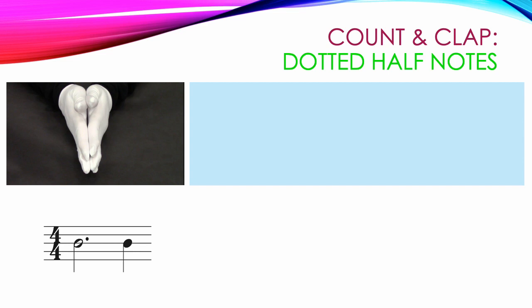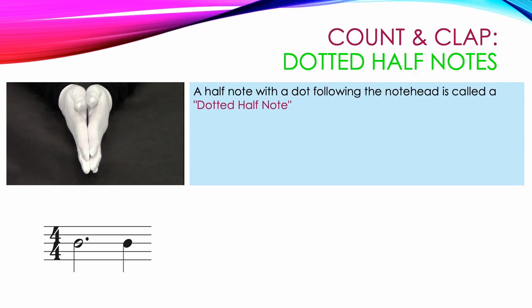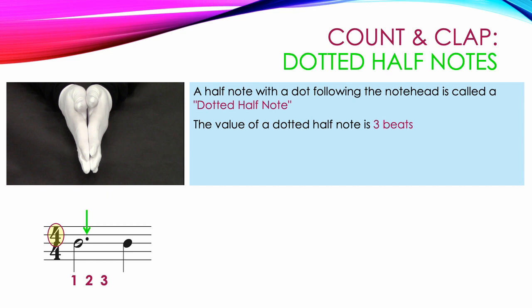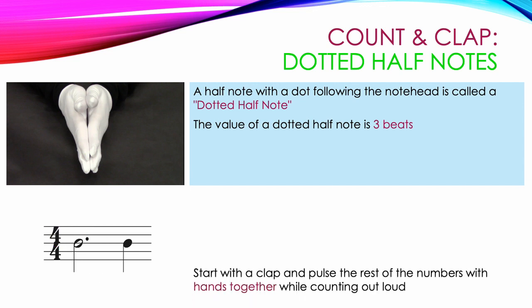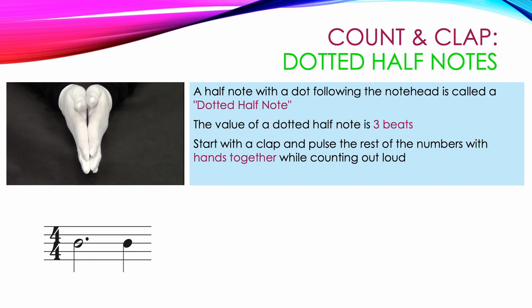Now that you understand how ties work, it's time to take a look at a new kind of note. A half note with a dot following the note head is called a dotted half note. The value of a dotted half note is three beats, so we put the numbers one, two, three for the counting under this note. Our time signature has a four on top, so every measure must have four counts. In this case, a quarter note rounds out the measure — it could easily be a quarter rest. So count four goes on the last quarter note. To correctly clap and count the dotted half note, start with a clap and pulse the rest of the numbers with your hands together while you count out loud — just one count longer than a half note. We clap on count one and keep our hands together for counts two and three.